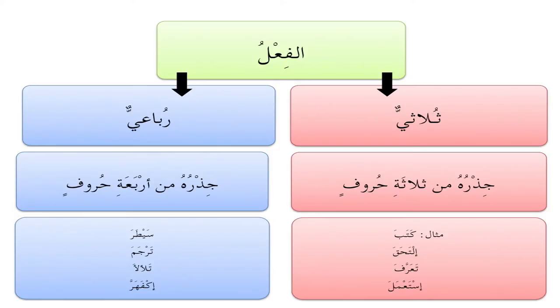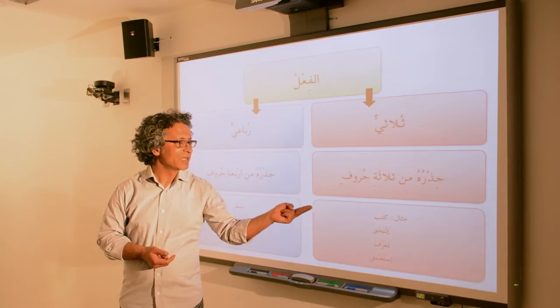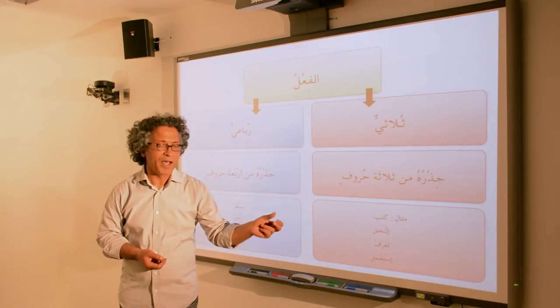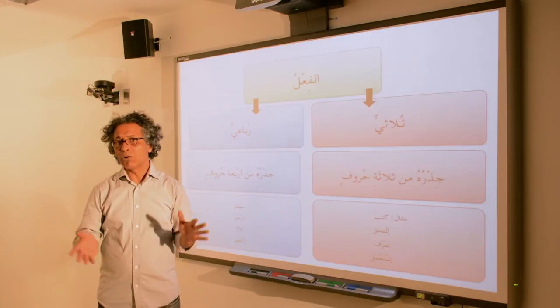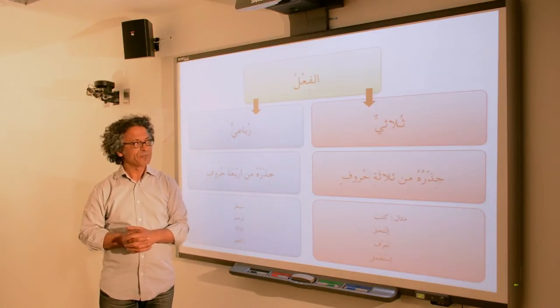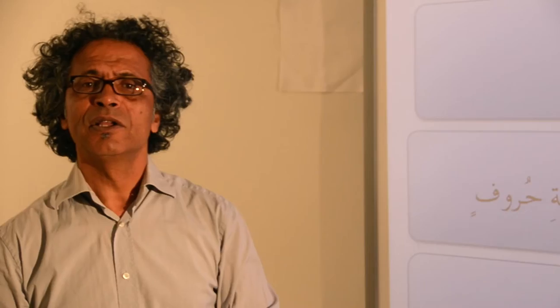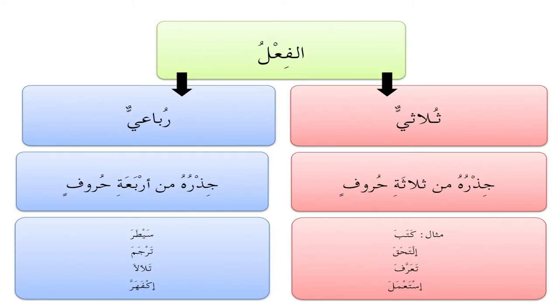الثلاثي: جذره من ثلاثة حروف، meaning the root is made of three letters. مثال: كتب، التحق، تعرف، استعمل — and all the other letters are additional. أما الرباعي، جذره من أربعة حروف. The root is made of four letters, and all the letters in a verb like this — which means to dominate — are actually part of the root.